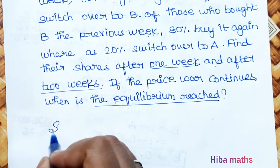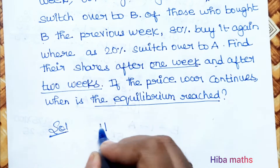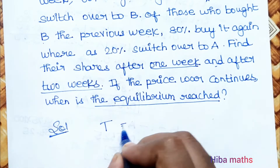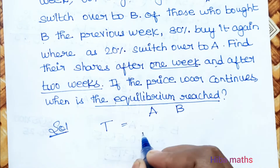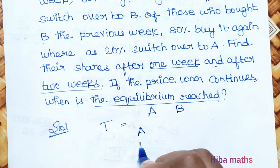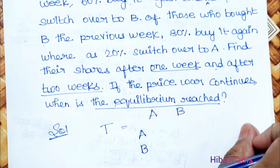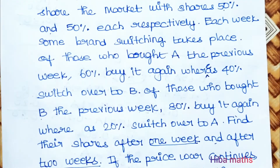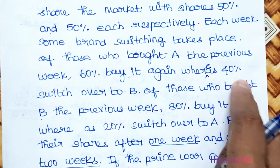First, we find the transition probability matrix. Since there are two products, it is a two-by-two matrix. First we place the values 60 and 40.